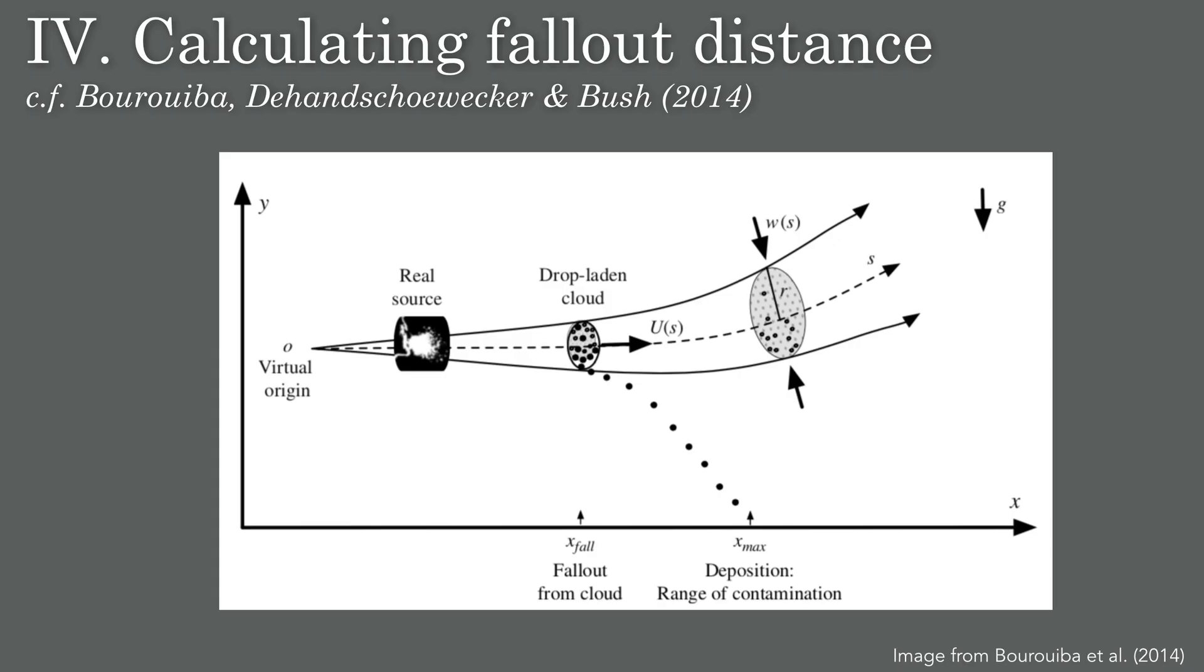Now, previously I broke the evolution of the sneeze into three phases, but in fact our model for phase 3 was missing a key ingredient, which was the fallout of the particles. After the initial jet phase, where the largest droplets have fallen out, the small droplets are contained within a puff or cloud. These small droplets will circulate within the cloud for a while before they settle out, and this is what the authors refer to as the fallout distance. It's this distance that we are primarily concerned about.